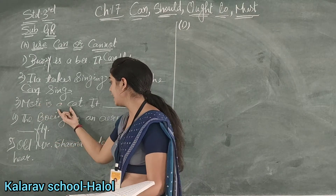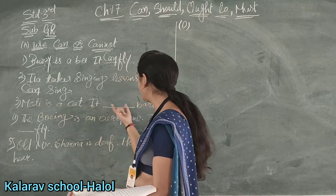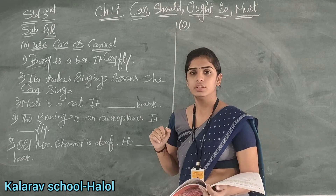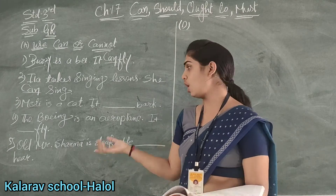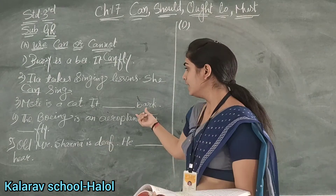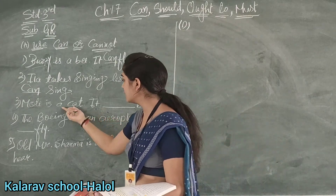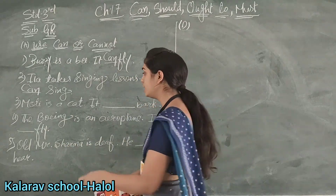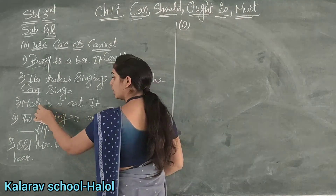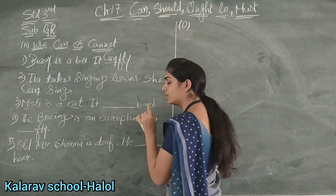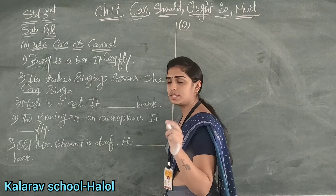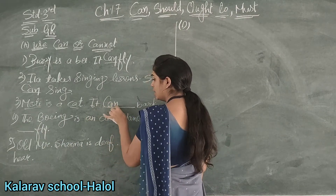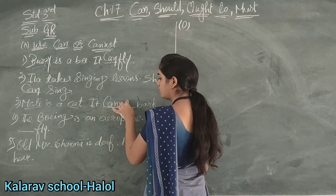Muthi is a cat. He could dash bark. Bark — who barks? A dog barks. What does a cat say? Meow meow. So Muthi is a cat — it cannot bark. She can meow. So the answer is: cannot bark.